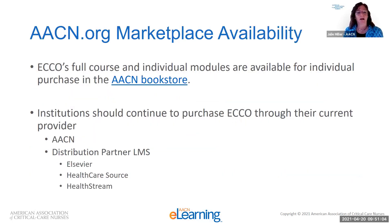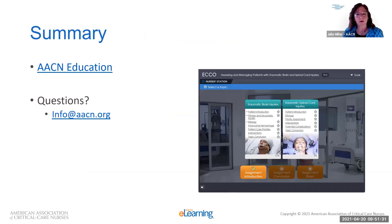AACN's ECHO course is available as a full course and individual modules for self-study in the AACN bookstore, linked here. Institutions should continue to purchase ECHO through their current provider — either the AACN or distribution partner LMS, Elsevier Healthcare Source, or HealthStream — and individual modules are also available for institutional purchase. In summary, AACN is here to help with ECHO whatever you need. Please contact info@AACN.org. My name is Julie Miller, and I've been pleased to present this content for you today.